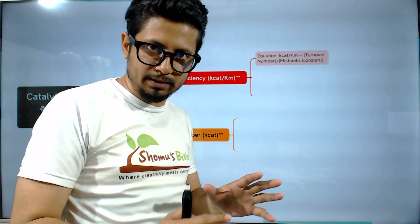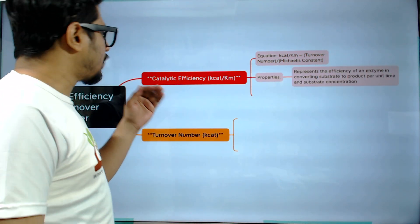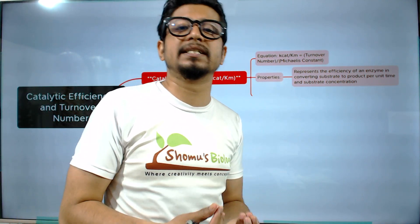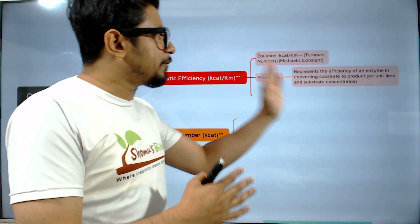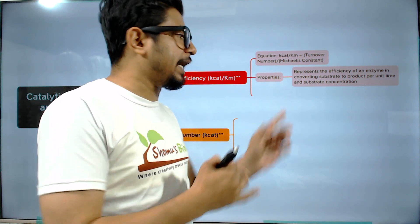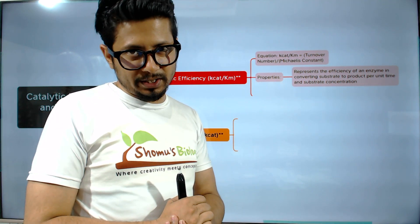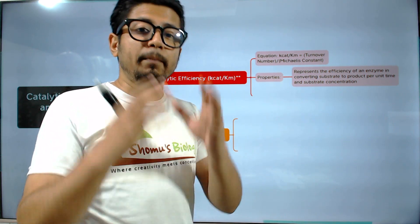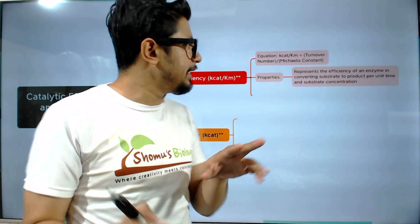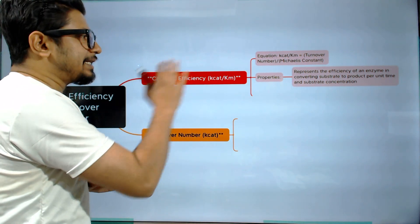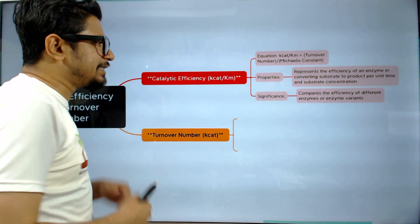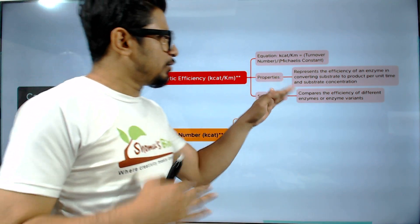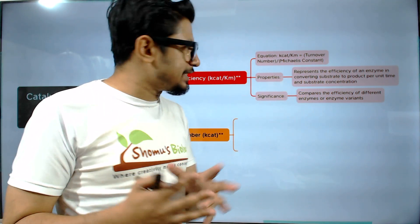The property of catalytic efficiency is that it represents the efficiency of an enzyme to convert substrate to product per unit time at a given substrate concentration. So at a given substrate concentration, how much substrate can be converted to product per unit time by an enzyme is known as its catalytic efficiency.